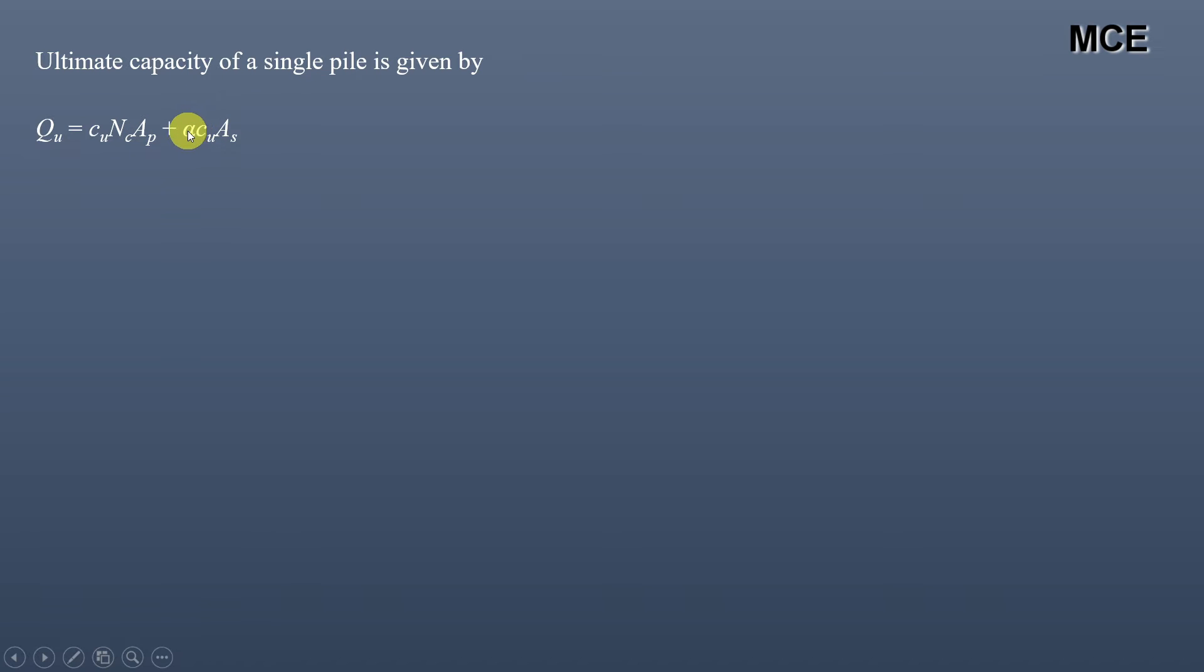The Cu in the question is 50 kPa. Nc bearing capacity factor is 9 for square and circular piles as proposed by Skempton. Cross-sectional area of pile is π × D² / 4, plus α which is 0.9...